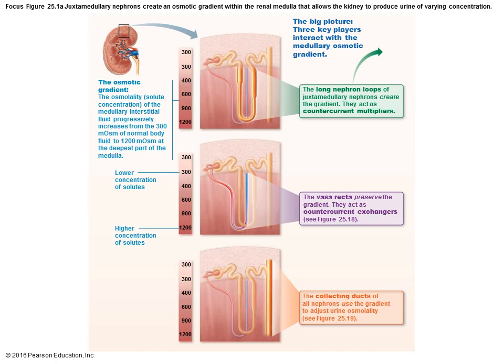If you remove another 25 mL of water, leaving 50 mL with 5 grams of salt, the concentration per mL is higher — you went from 5 grams per 100 mL to 5 grams per 50 mL, so it's much more concentrated and osmotic pressure is higher just by removing that water. The nephron loop — the loop of Henle — helps to create this gradient. The vasa recta, the peritubular capillaries surrounding these tubules, help to preserve that gradient. Then the collecting ducts use that gradient to adjust the urine concentration.